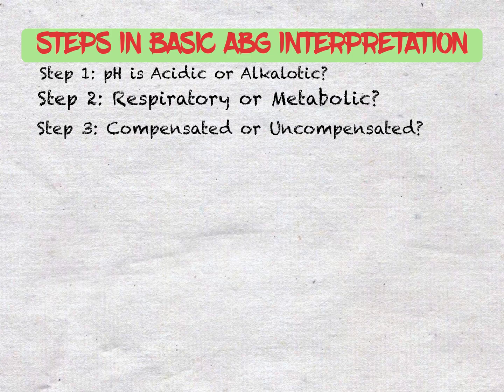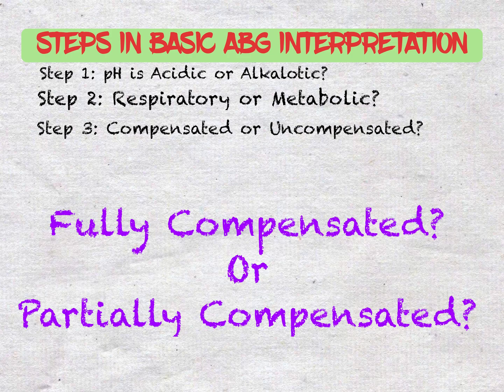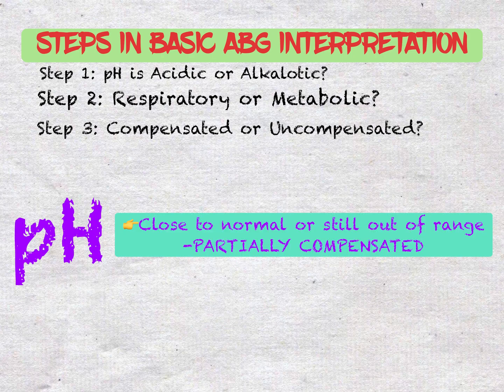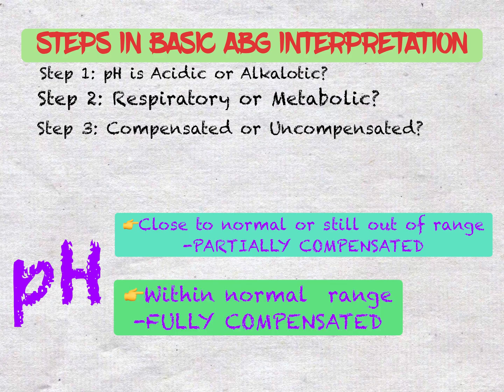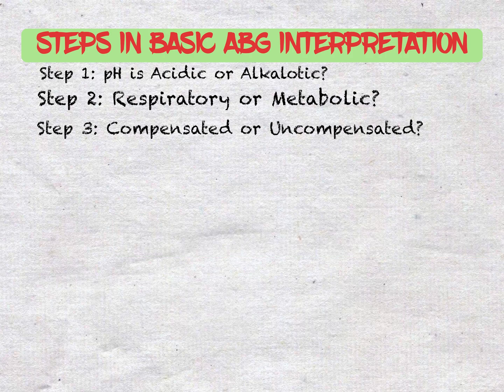Next, identify whether compensation is fully or partially compensated by referring back to the pH. If the pH is not within or close to normal ranges, then partial compensation exists. If the pH is back within normal ranges, then full compensation has occurred. A non-compensated or uncompensated abnormality usually indicates an acute event is occurring. Note that the terms partial or fully compensated describe the level of compensation and do not necessarily mean the patient's ABG is normal or that they are healthy.